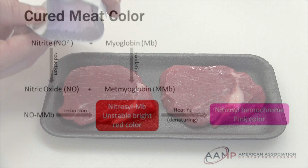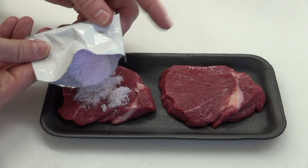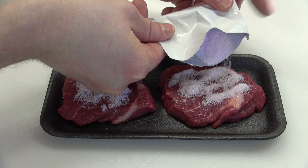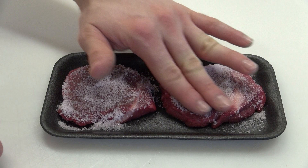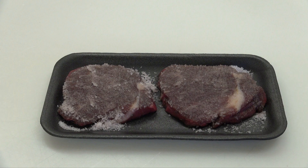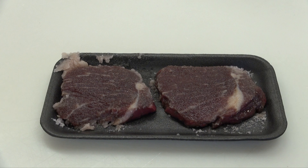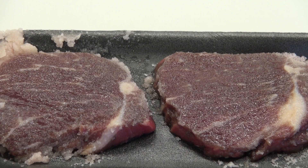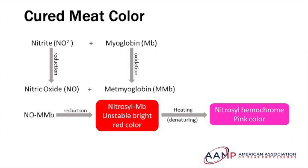Here we can see the interaction between nitrate and myoglobin and the full chemical reaction that results in nitrosyl hemochrome. Here we are applying nitrite to two pieces of raw beef. Over a ten-minute period we can see the chemical reaction take place. Nitrate acts as a strong oxidant to the heme pigment myoglobin, converting it to metmyoglobin while simultaneously reducing itself to nitric oxide. Nitric oxide then becomes bound to the heme group of metmyoglobin, forming nitric oxide metmyoglobin.